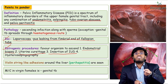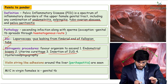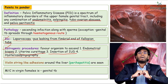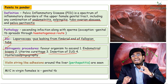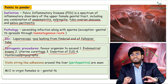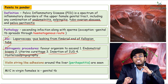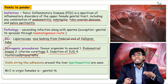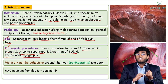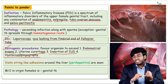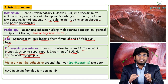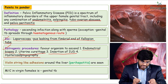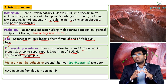Hysterosalpingography (HSG) is another iatrogenic cause. During HSG, radiopaque dye is pumped from the cervix into the uterus, and this dye can carry bacteria into the uterus, causing endometritis, which can progress to salpingitis, tubo-ovarian abscess, and finally peritonitis.